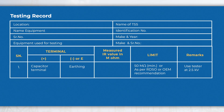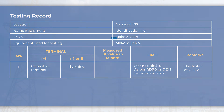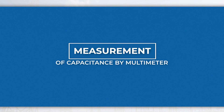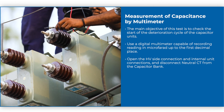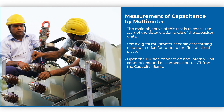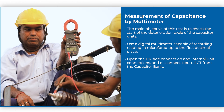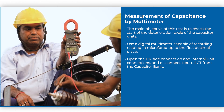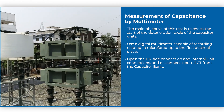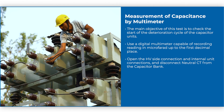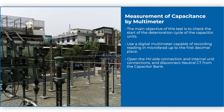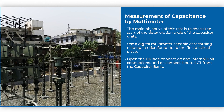Testing data may be recorded in the specified format for further investigation and future reference. Measurement of capacitance by multimeter: the main objective of this test is to check the start of the deterioration cycle of capacitor units. Use a digital multimeter capable of recording readings in microfarads up to the first decimal place. Open the HV side connections and internal unit connections and disconnect the neutral CT from the capacitor bank.